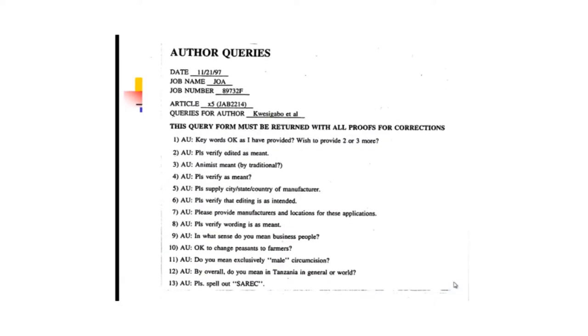For example, they may ask: 'Is it a city, a state, a country, or a manufacturer? Or verify whether any editing is intended.' What sometimes happens is when people in the first world find out the article is coming from Africa, they give it to an English specialist. The specialist changes some words thinking we don't know English, but the words they put in are not the words you want. For example, if you said 'I interviewed peasants in a certain village,' they change it to 'farmers.' But peasants are not equal to farmers — so you tell them to return your initial word.